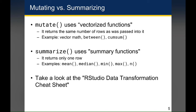Summarize is commonly used to compute summary statistics, which are, for example, mean, median, min, max, or the number of rows. If you want to remember all the different functions that can work with mutate and summarize, the common ones are listed in the RStudio data transformation cheat sheet, which you can find online.